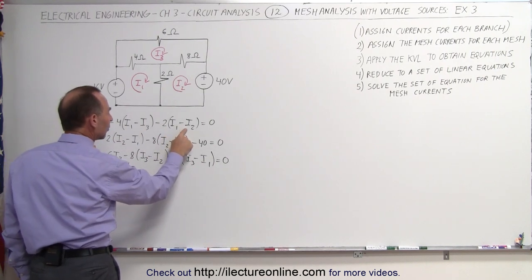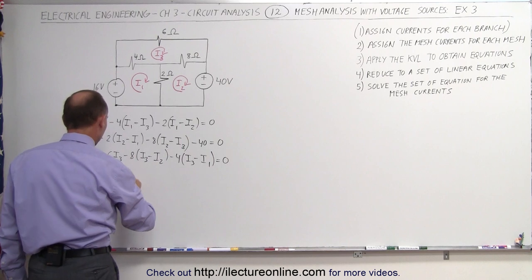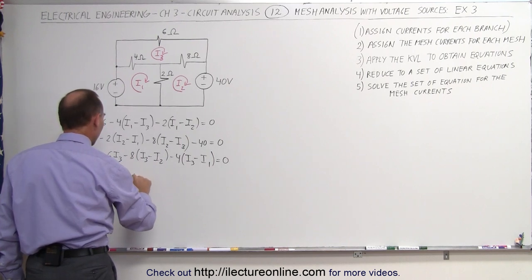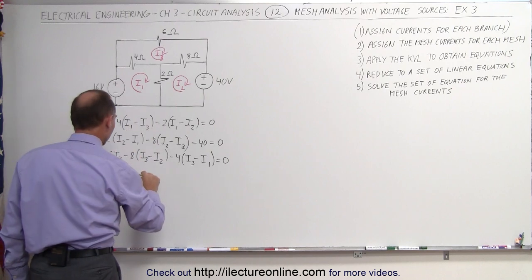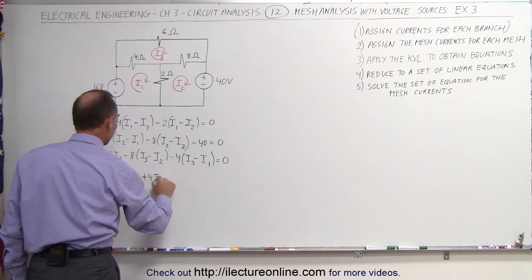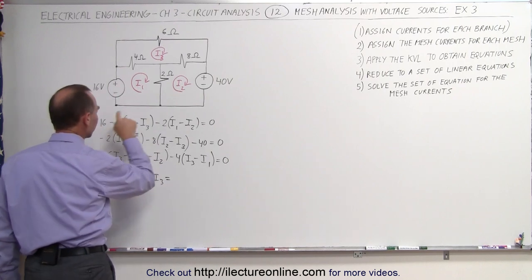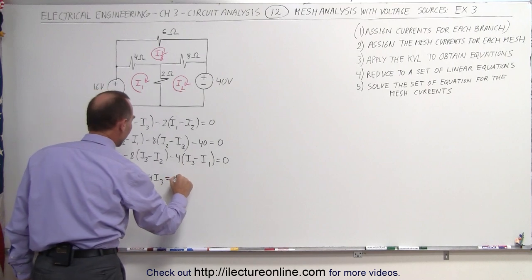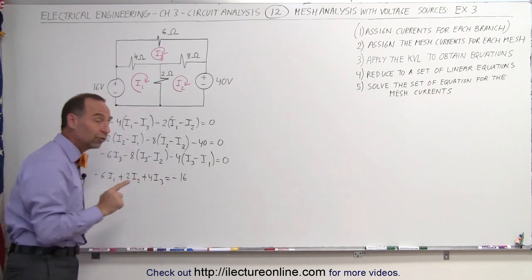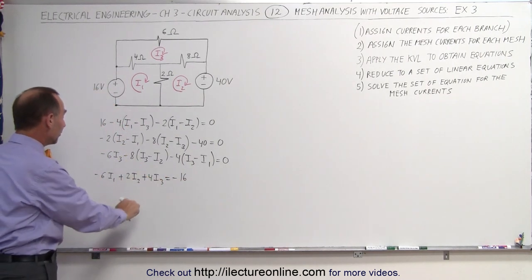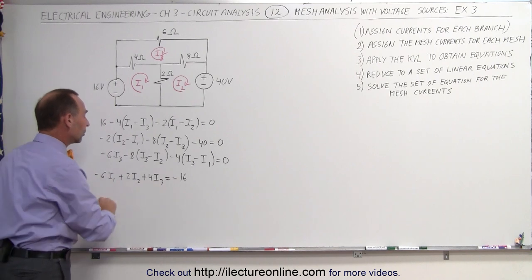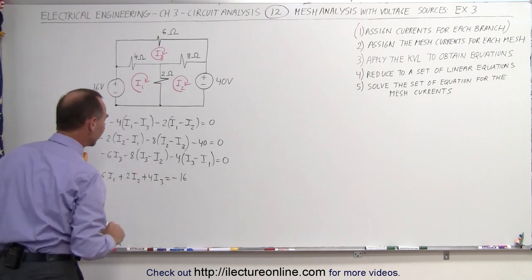Minus 2 times minus I2 is plus 2I2. Minus times minus gives a plus, so plus 4I3. Equals — bring the 16 across — that becomes minus 16. Here we took our first equation and rewrote it in a simple format where we have I1, I2, and I3 in order like that.